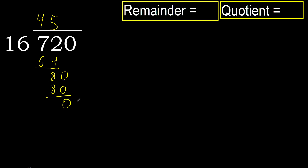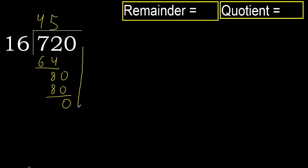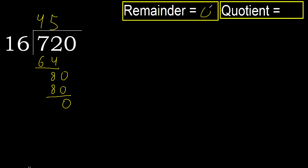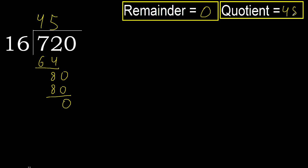0, therefore finish it. Finish it because here there is no number, therefore finish it. 720 divided by 16 is 45.